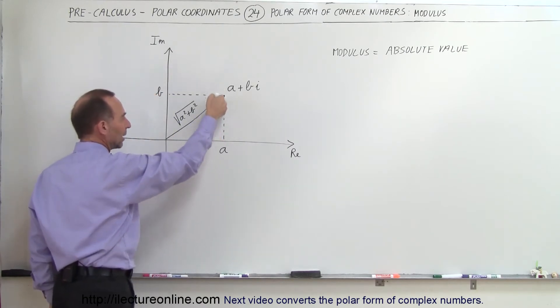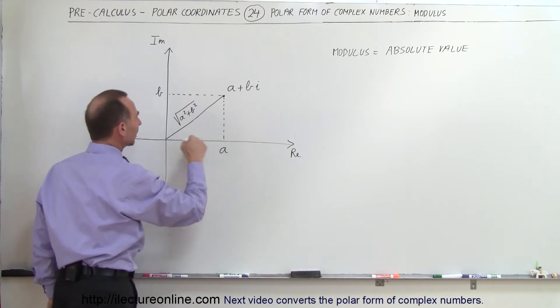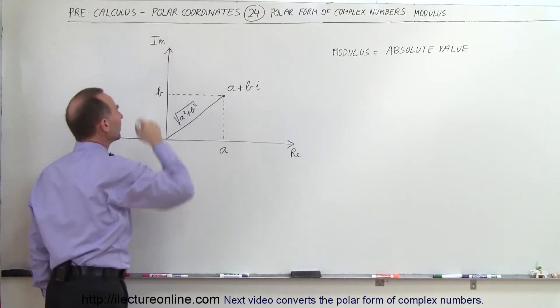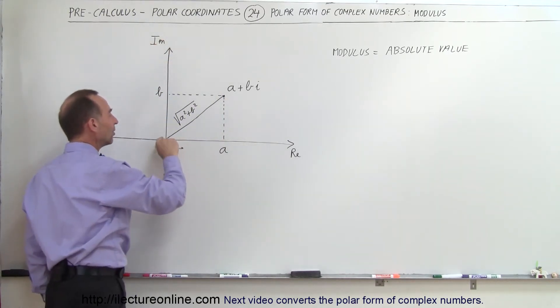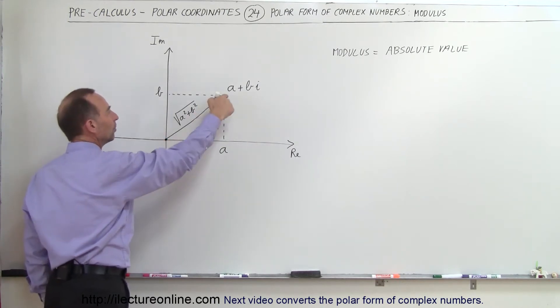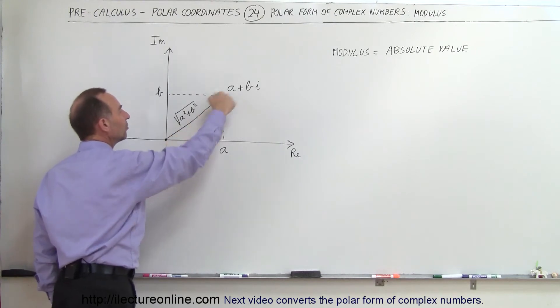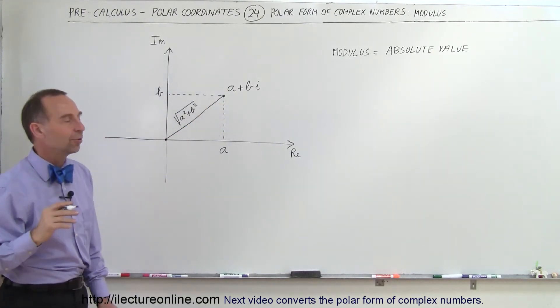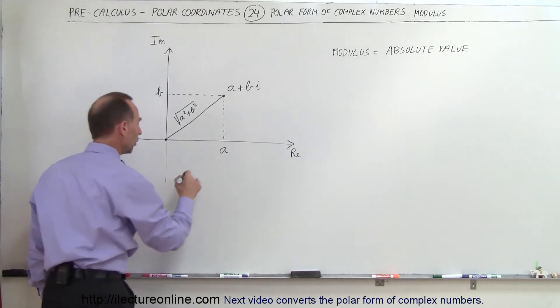a represents a point on the real axis, b represents a point on the imaginary axis, and then the distance from the origin, from the center of the axis, to the point is the distance, also known as the absolute value of that particular point.